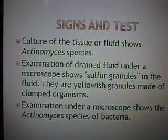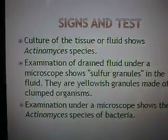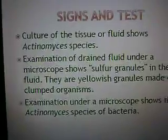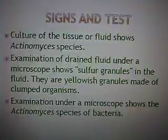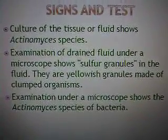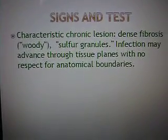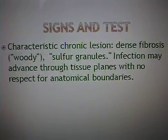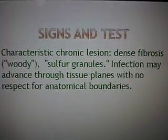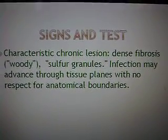Some of the tests and signs that they look for: they would take a culture of the tissue and look at it under the microscope. If they see the actinomycosis species, then they denote that the person has actinomycosis. Also, upon examination of the drained fluid under the microscope, one thing that is very significant to this particular microorganism is that it has sulfur granules in the fluid, usually denoted by yellowish granules made of clumped organisms. Some of the signs are characteristic lesions — dense, fibrous, woody-like lesions — and again, the sulfur granules in the fluid. In some cases, the infection may advance through tissue planes with no respect to anatomical boundaries.